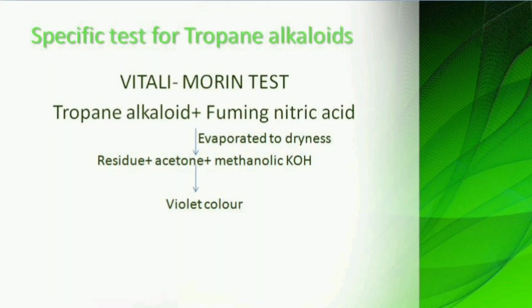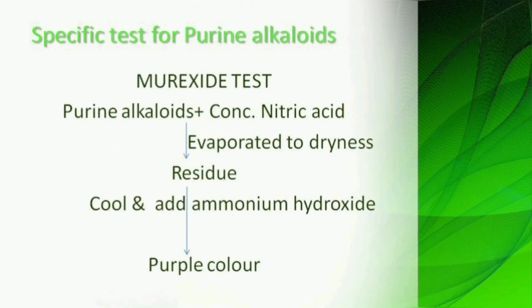For specific alkaloids: tropane alkaloids use the Vitali-Morin test — add fuming nitric acid, evaporate to dryness, then add the residue to methanolic KOH, and it gives a violet color. This is the specific test for tropane alkaloids alone. For purine alkaloids, the Murexide test is used: add concentrated nitric acid, evaporate to dryness, cool the residue, and add ammonium hydroxide — you will get a purple color. That is the specific test for purine alkaloids.